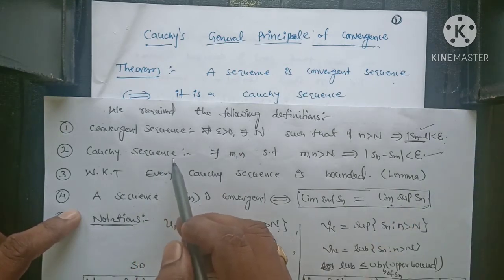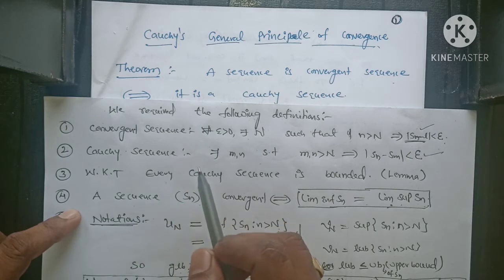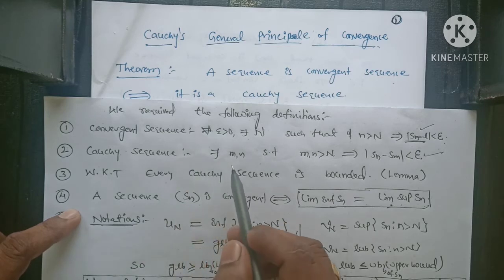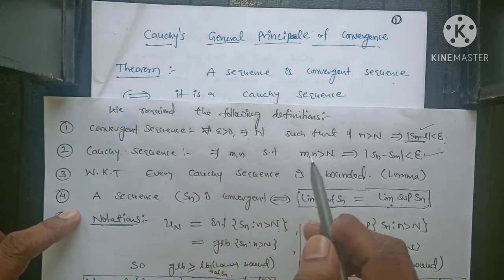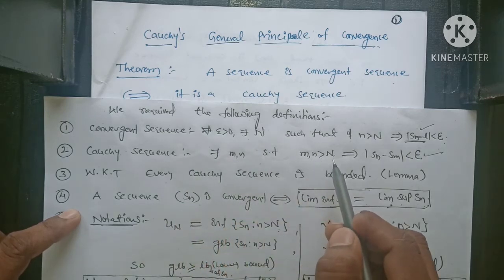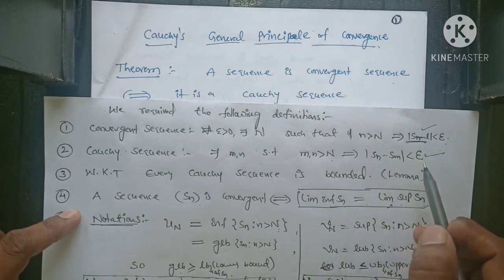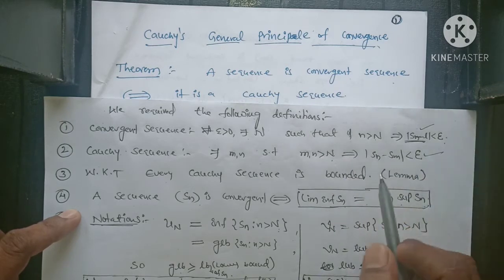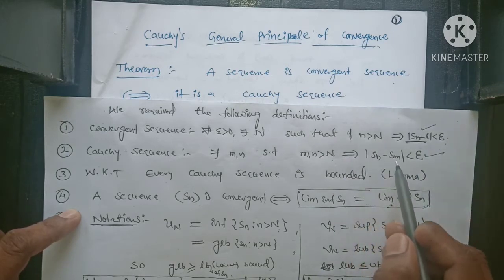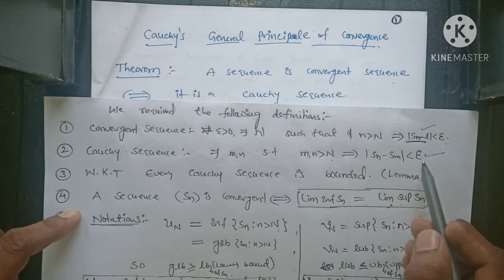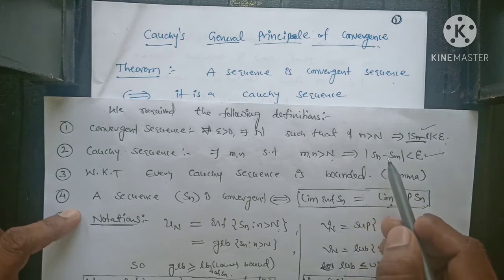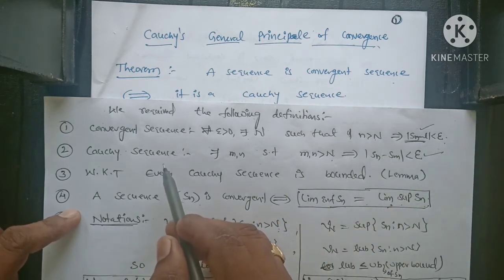What is a Cauchy sequence? For each epsilon greater than 0, there exists a number M and N such that M, N greater than capital N implies mod(Sn minus Sm) less than epsilon — meaning the difference of these two sequence terms is always less than epsilon. That sequence Sn is called a Cauchy sequence.